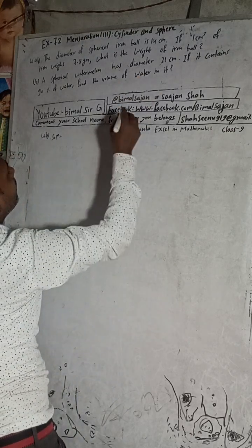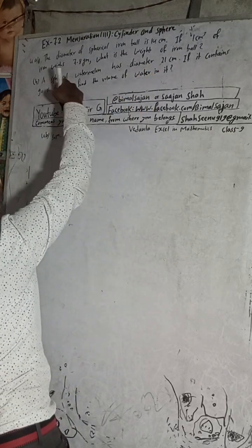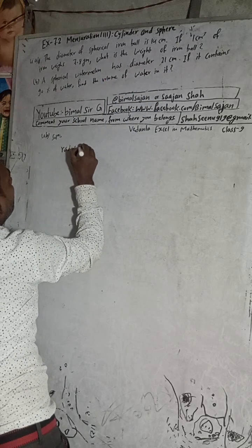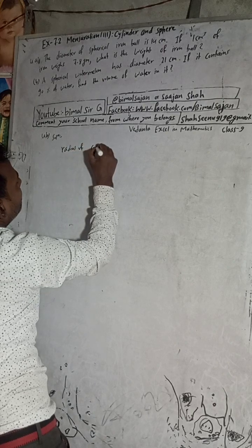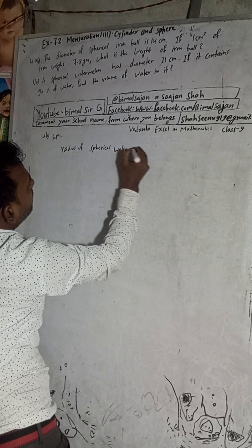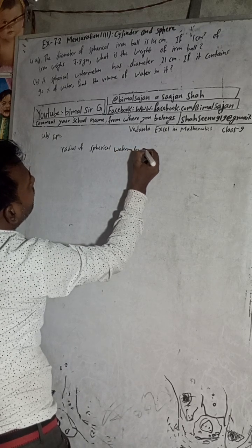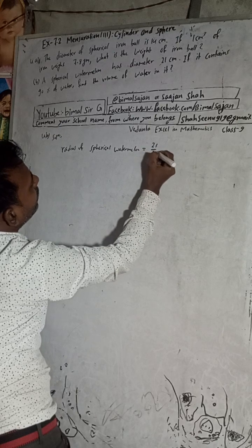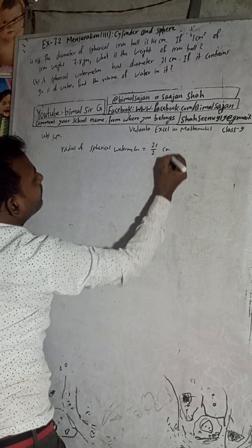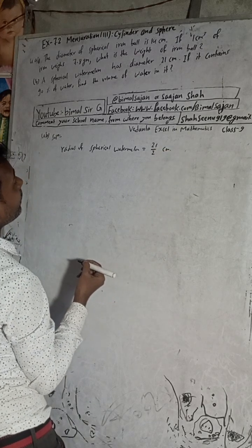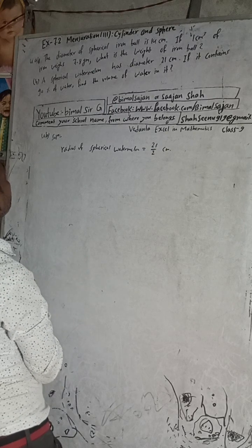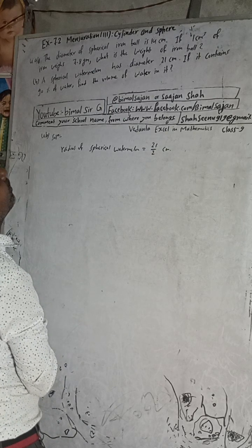So, given here: the diameter is given. So we can write the radius of the spherical watermelon as 21 by 2. Now this will be — half of 21 — so the radius is 21/2 cm. Now, if it contains 90% of water, we need to find the volume of water in it.